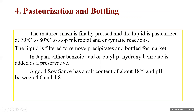Good quality shoyu — soy sauce — can be obtained after six months of fermentation. The temperature of the moromi must be controlled as follows: 15 degrees Celsius for the first month, then 28 degrees Celsius for four months for yeast fermentation, and then 15 degrees Celsius again for one month during finishing. This temperature control over six months of aging gives good quality soy sauce.